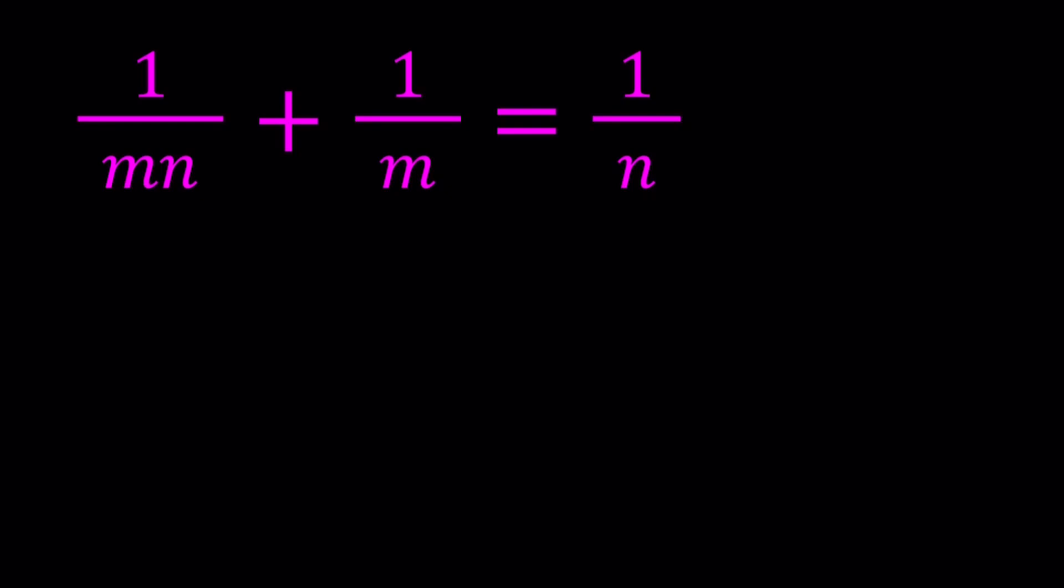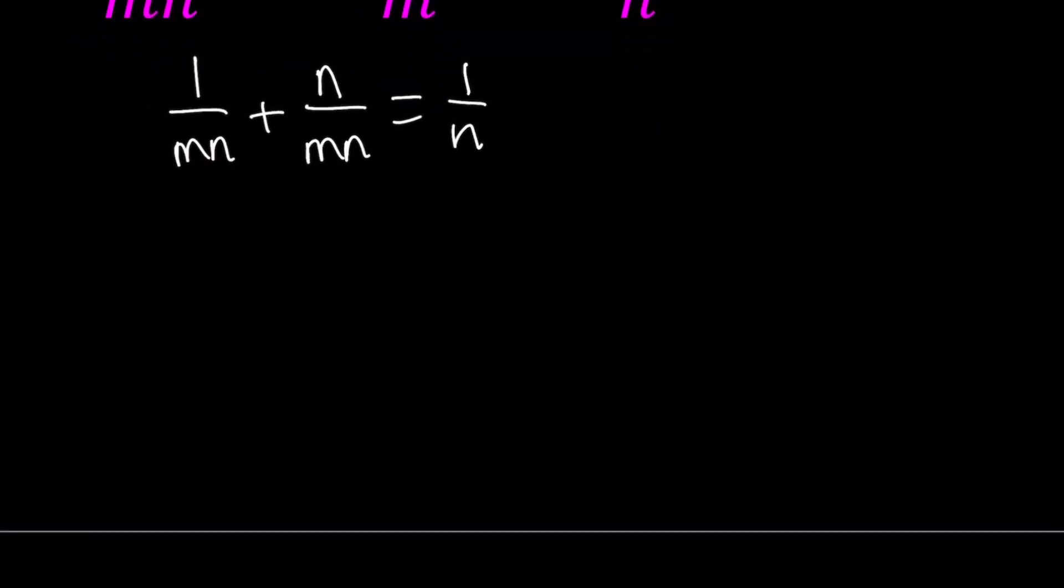So we're going to be solving for m and n values. Let's make a common denominator first. So multiply the second one by n. Now you can go ahead and add the numerators. 1 plus n divided by mn equals 1 over n.